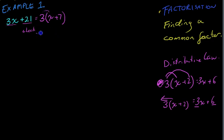I'm going to check my answer. 3 times x is 3x. 3 times 7 is 21. 3x plus 21. That's what I started with, so I'm probably right.